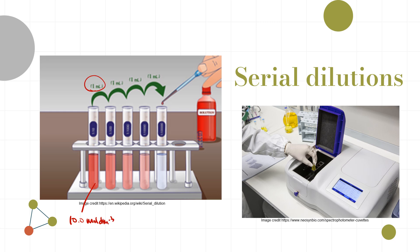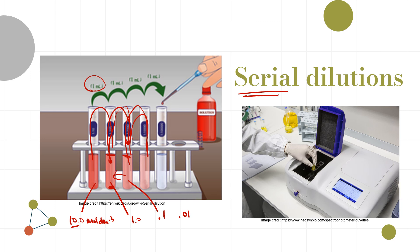Let's say you have a 10 mol dm⁻³ solution. Take 1 cm³ and add it to a test tube with 9 cm³ of water — now it's one-tenth the concentration: 1 mol dm⁻³. Take 1 cm³ of that and add 9 cm³ of water — it's 0.1 mol dm⁻³. Do it again: 0.01 mol dm⁻³. This is a serial dilution — doing dilutions in series, taking a little from each tube to make the next.